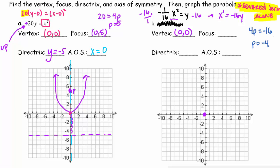And you'll notice that p is negative because this 16 is negative, which means it opens down. So my focus needs to be 4 units away. 1, 2, 3, 4. So my parabola opens down. And again, our focus is always inside the parabola. So that point is (0,-4).